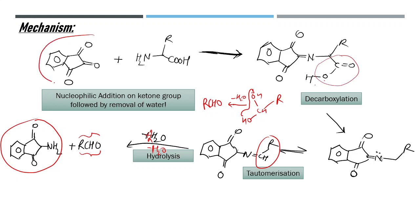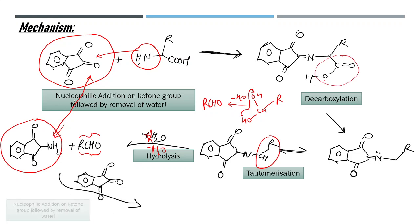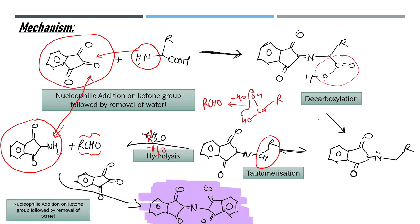Because ninhydrin is still present in solution, this released amine reacts with a second molecule of ninhydrin via the same nucleophilic addition and dehydration as in the first step, finally giving a purple-colored dye. This is the ninhydrin test used to detect amino acids in the laboratory.